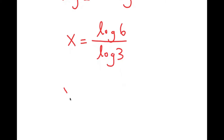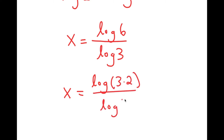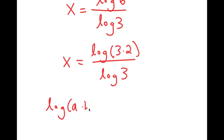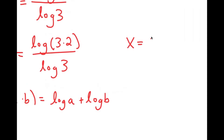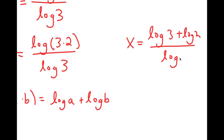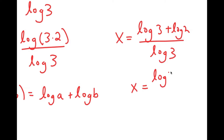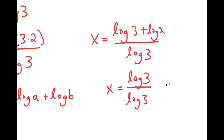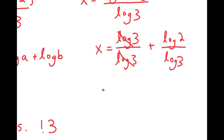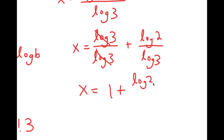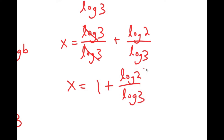Now log 6 is the same thing as log of 3 times 2. And if I have something in the form log(a times b), this is equal to log a plus log b. So log(3 times 2) turns into log 3 plus log 2, and I have this over log 3. So this turns into log 3 over log 3 plus log 2 over log 3. These two cancel out, and I get 1 plus log 2 over log 3. So this is my answer.